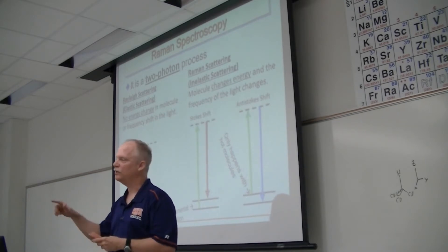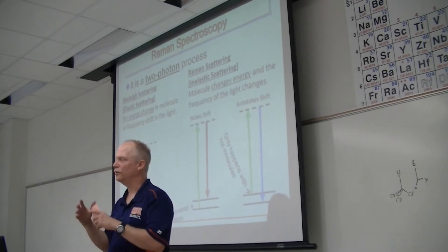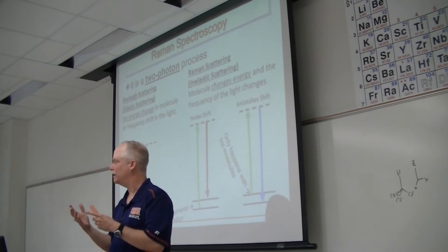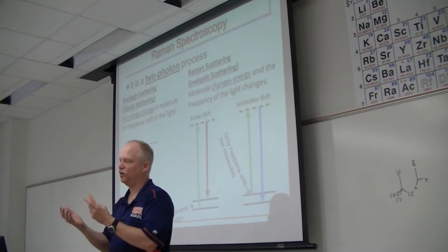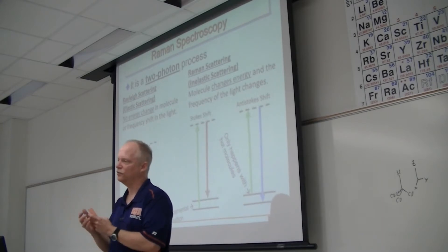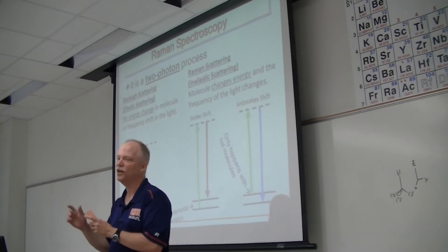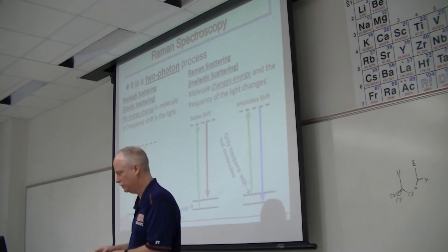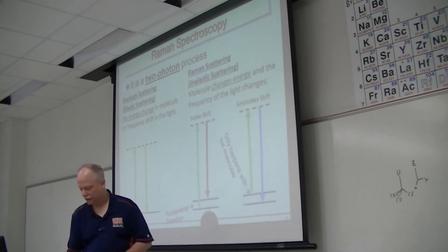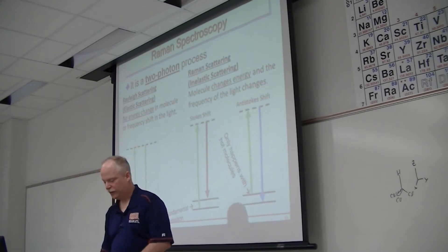Benzene's spectrum is way too simple for the big molecule that it is, and it tells you that molecule is really symmetric. Whereas if you had some other structure for six carbon atoms and six hydrogen atoms that wasn't symmetric, you'd have a really complicated spectrum. That's a very clear illustration of how symmetry explains the differences between chlorobenzene and benzene. So that's getting ready for next week.